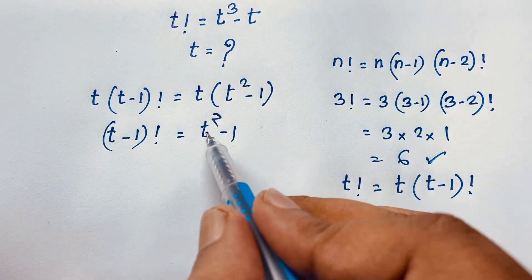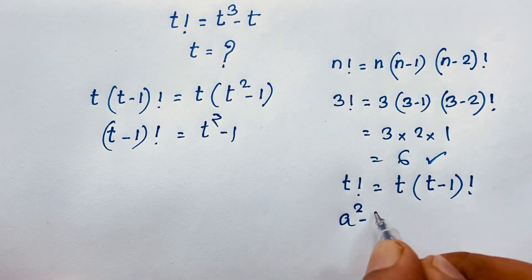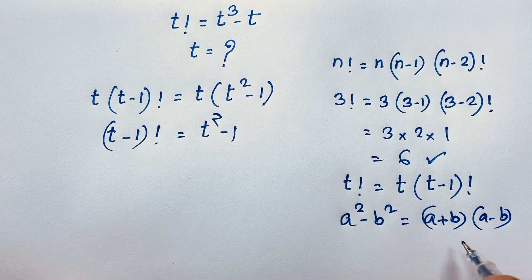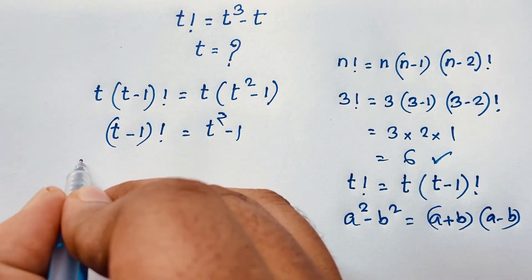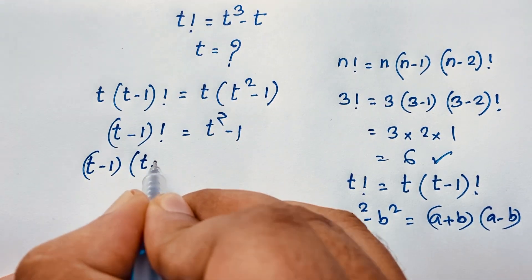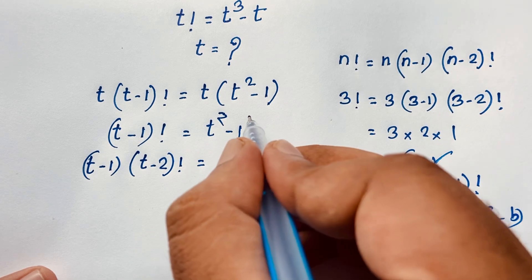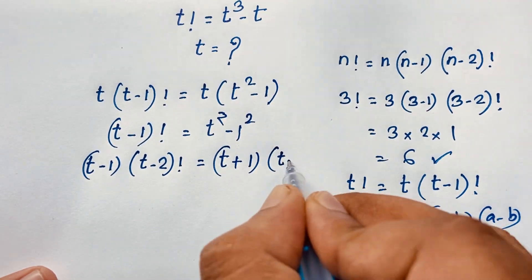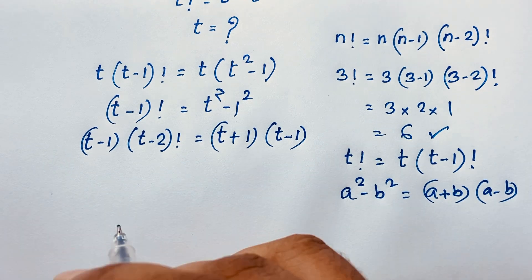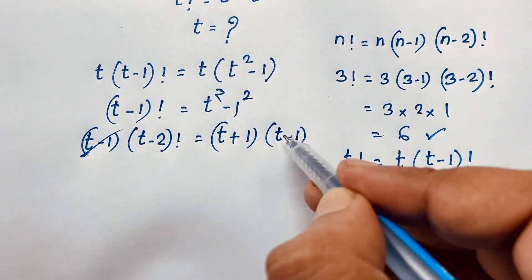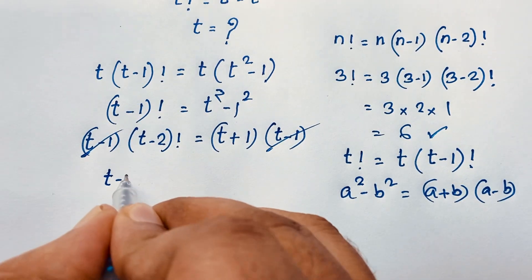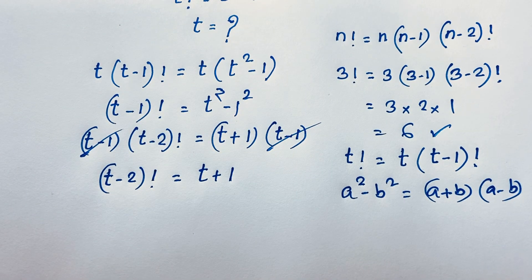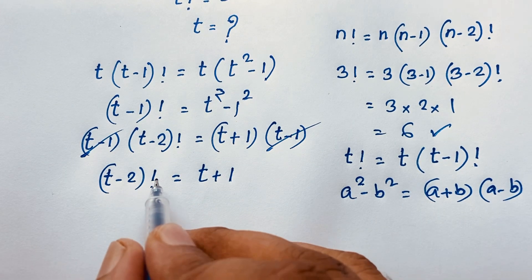Now here we have a difference of squares: t² - 1. According to the identity a² - b² = (a+b)(a-b), I can write (t-1)! as (t-1)(t-2)! equal to (t+1)(t-1). Now dividing both sides by (t-1), those cancel out. We find that (t-2)! = t + 1.